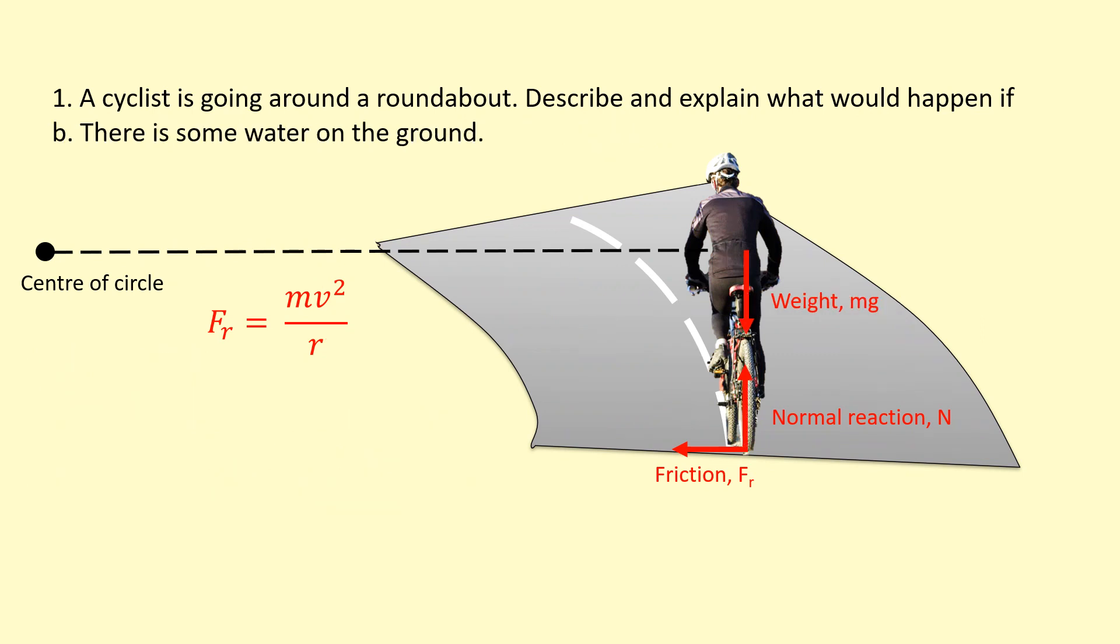In part B, we're asked to explain what would happen if there's some water on the floor. If there's some water on the floor, that's going to affect the friction. The friction depends on two things. It depends on the coefficient of friction, which is basically how rough the surface is, times the normal reaction force.